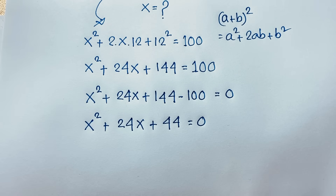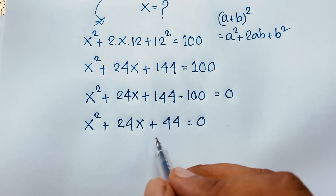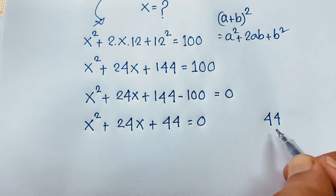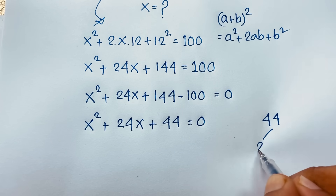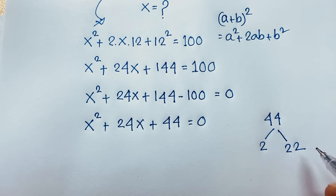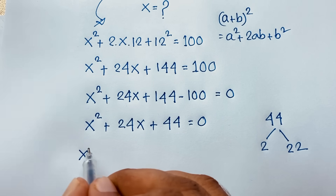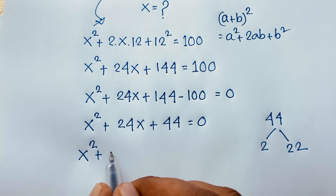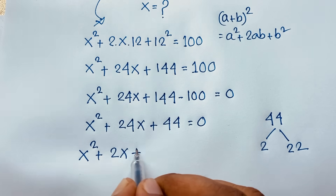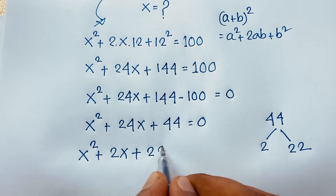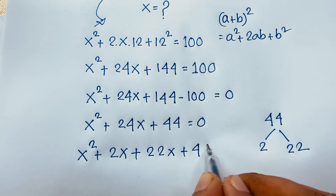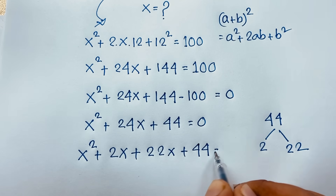Now we are doing the middle term factoring here. The middle term product is 44, so 44 = 2 times 22. So you can see here, x² + 2x + 22x + 44 = 0.